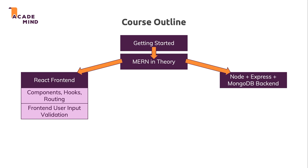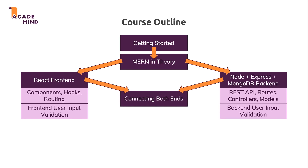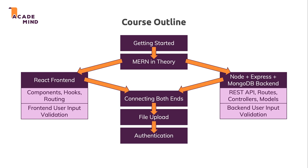Next we'll focus on Node and Express — creating our own REST API, implementing routes, using controllers and models, and adding back-end user input validation. We'll also connect the back end to MongoDB. After that we connect the two ends together for our first working MERN application. Then a file upload module covers storing images on our own server, followed by an authentication module covering user signup and login.